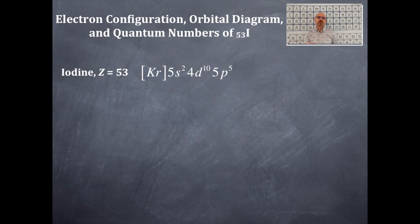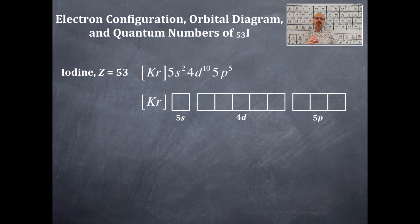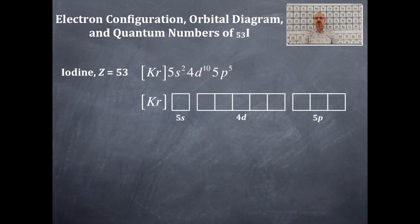From that information we're going to do the orbital box diagram using the krypton noble gas notation as well as that core. For the 5s, any s-type orbital, there's a single box. For a d-type orbital, as in this 4d, you're going to have five boxes. For the p-type orbital, as in this 5p, you're going to have three boxes. Now we're going to place those electrons in these boxes following the rules of electron placement in atoms.